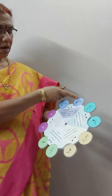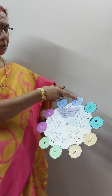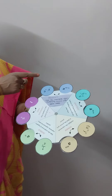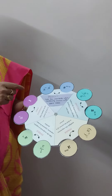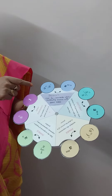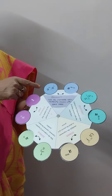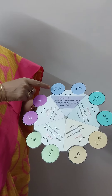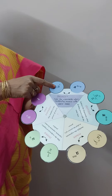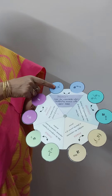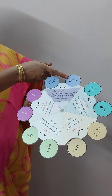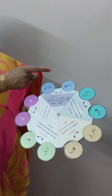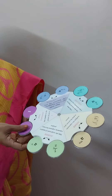Product rule: add the exponents when multiplying the powers with the same base. A to the power m, multiplied by a to the power n, is equal to a to the power m plus n.